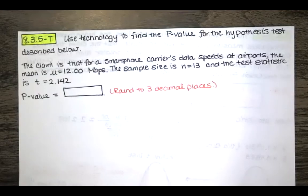In this video we solve problem 8.3.5-T from Essentials of Statistics 6th edition by Mario Triola. The problem statement asks us to use technology to find the p-value for the hypothesis test described below.